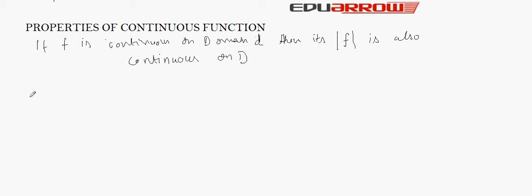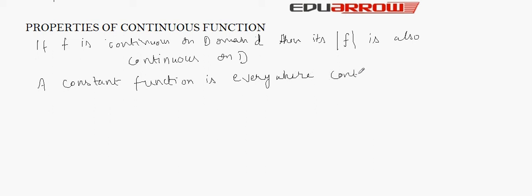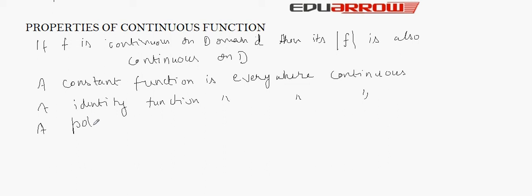Next, a constant function is everywhere continuous. A identity function is everywhere continuous. A polynomial function is everywhere continuous. A modulus function is everywhere continuous.